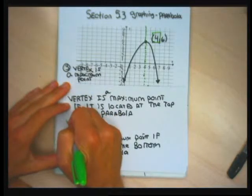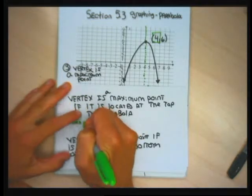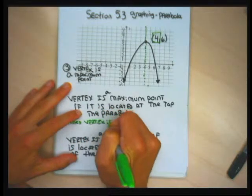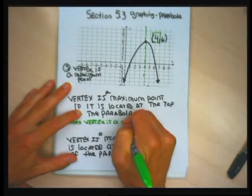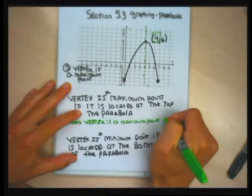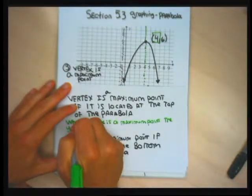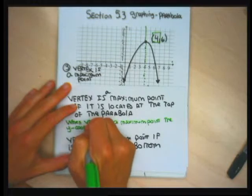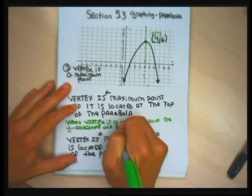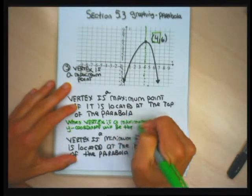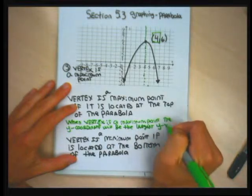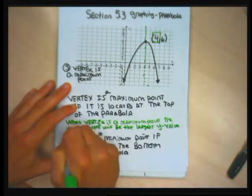When the vertex is a maximum point, the y-value of the vertex is the biggest y-value of any point on the graph. When the vertex is a maximum point, the y-coordinate of the vertex — in this case 6 — will be the largest y-value of any point on the graph.